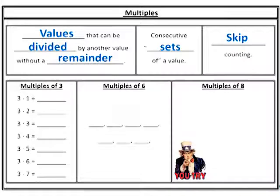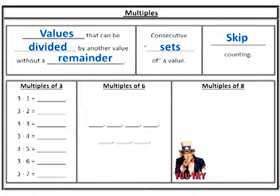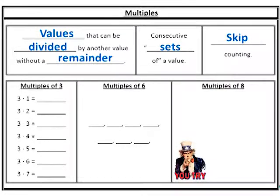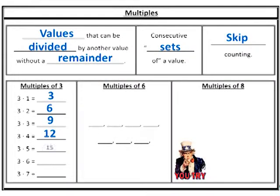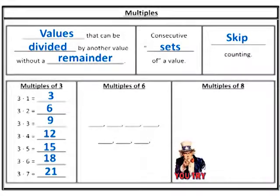So let's try the multiples of three. One way to think about it is sets of. Three sets of one, or one set of three, is three. Two sets of three is six. Three sets of three is nine, twelve, fifteen, eighteen, twenty-one. Again, if you know you're skip counting by threes, it helps.